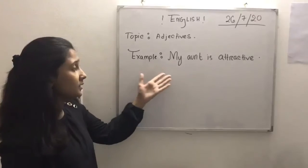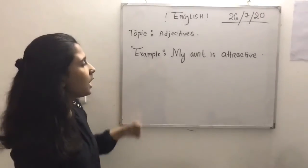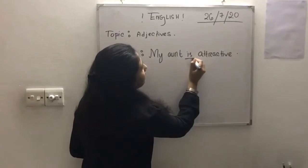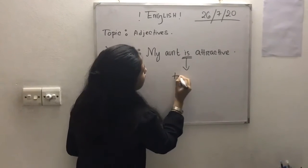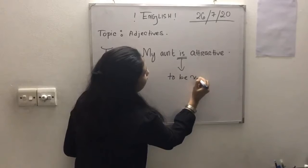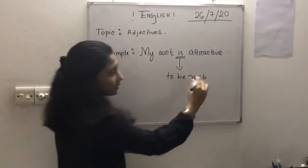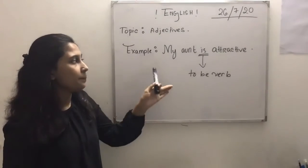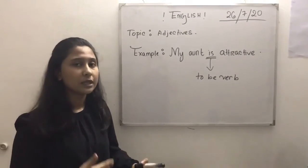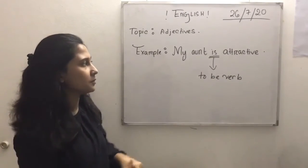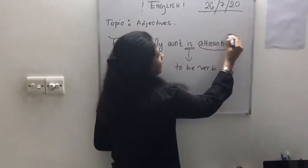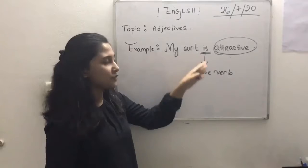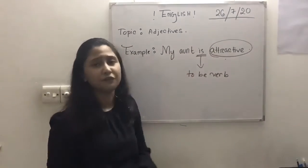In this example: 'My aunt is attractive.' Here 'is' is the 'to be' verb in this sentence. The adjective 'attractive' comes after the 'to be' verb, which is exactly as mentioned — an adjective can usually come after the 'to be' verb.